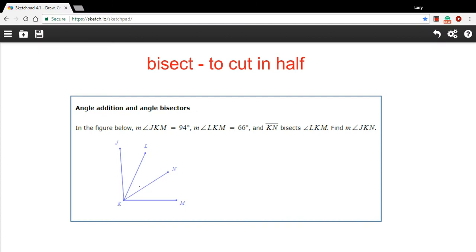In this problem, we've got a diagram with several angles in it, and we're given some information and asked to find the measure of angle JKN. So JKN would be this one right here. So that's what we're looking for.